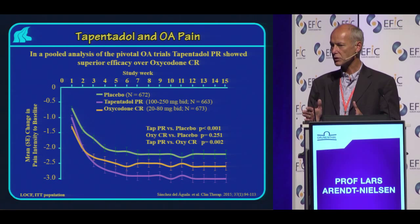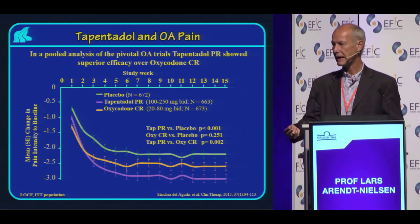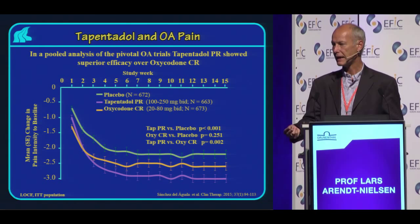The take-home message is: patients with knee osteoarthritis and chronic pain have local manifestations and central manifestations — including central integration and facilitation, as well as impaired descending inhibition. This applies not just to osteoarthritis but to many chronic pain conditions. Thank you very much to all my colleagues back home, and thank you very much for your attention.